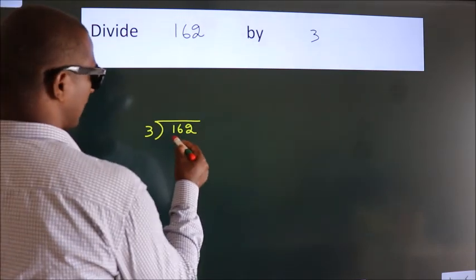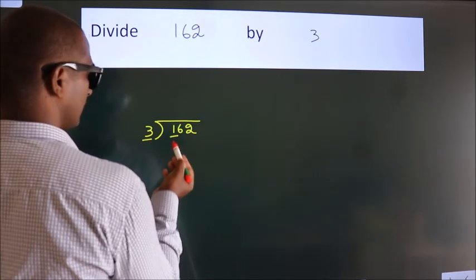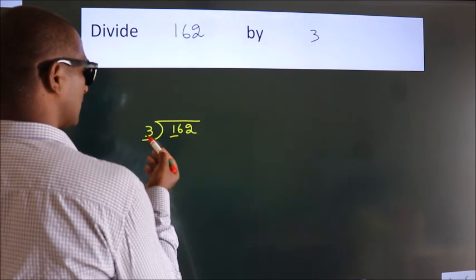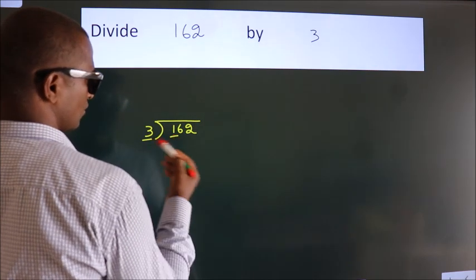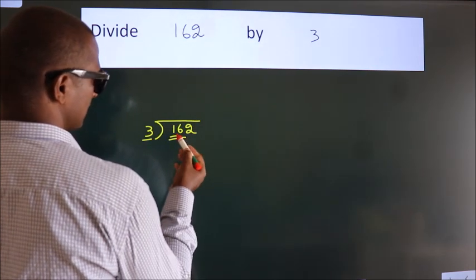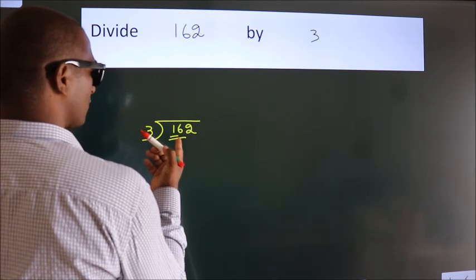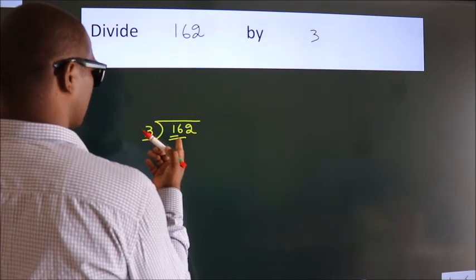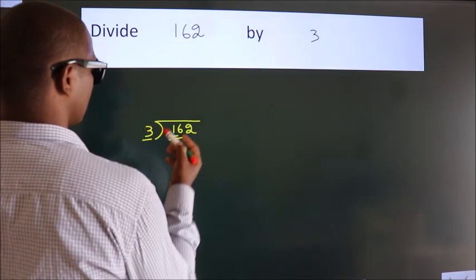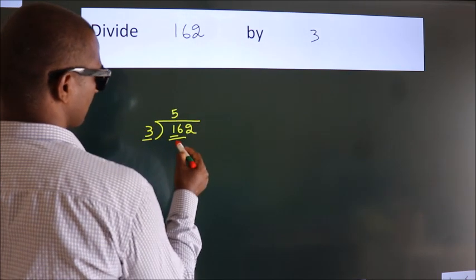Here we have 1, here 3. 1 is smaller than 3, so we should take 2 numbers: 16. A number close to 16 in the 3 times table is 3 fives, 15.